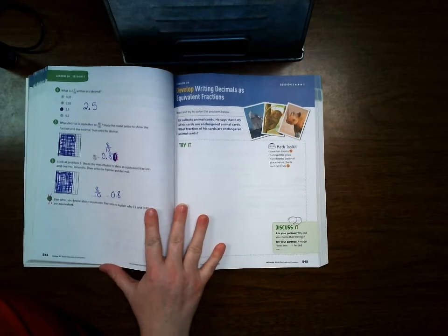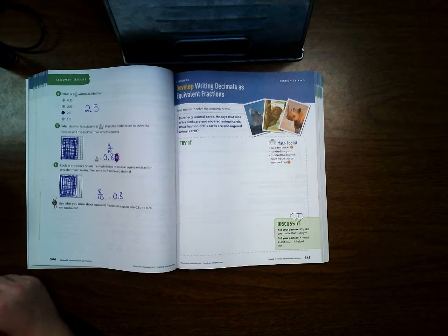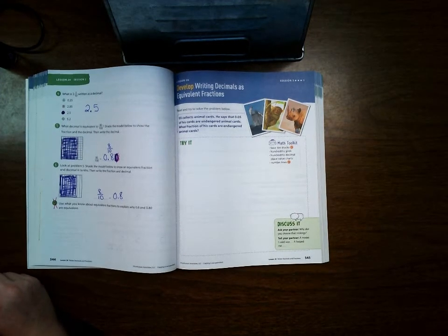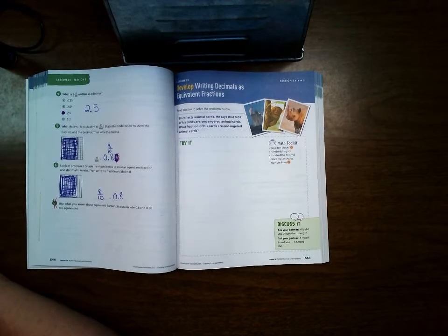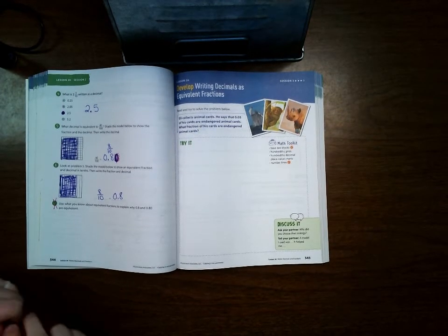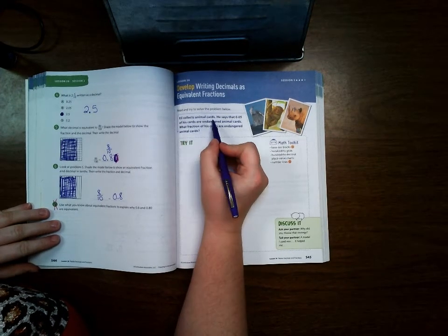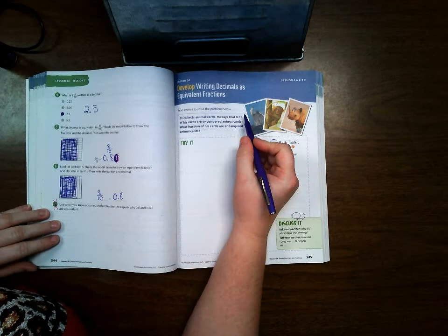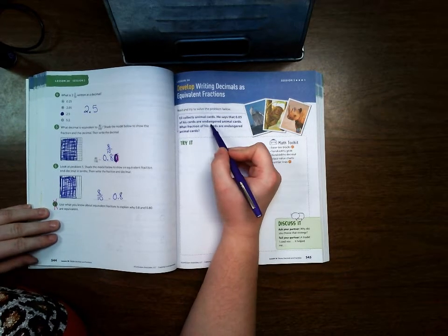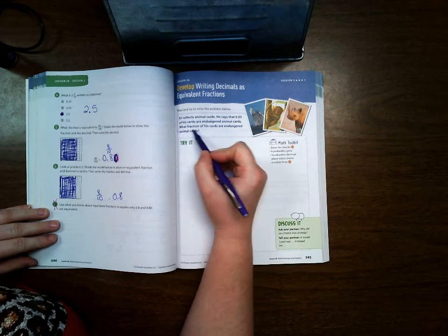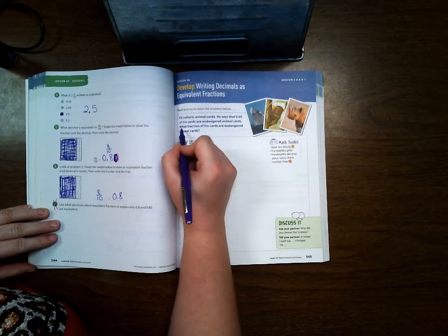Welcome back students, this is Lesson 26 Session 3: Writing Decimals as Equivalent Fractions. We are on page 545, so turn your book there. Eli collects animal cards. He says that five hundredths of his cards are endangered animal cards. What fraction of his cards are endangered animal cards?